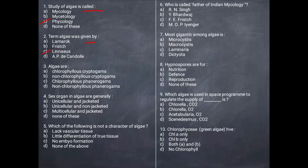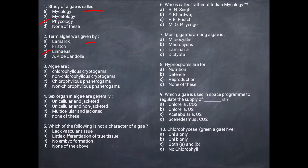Next question: What is algae? In algae, there is chlorophyll present, vascular tissues are absent, so we call it cryptogams. The answer is A — chlorophyll, cryptogams.